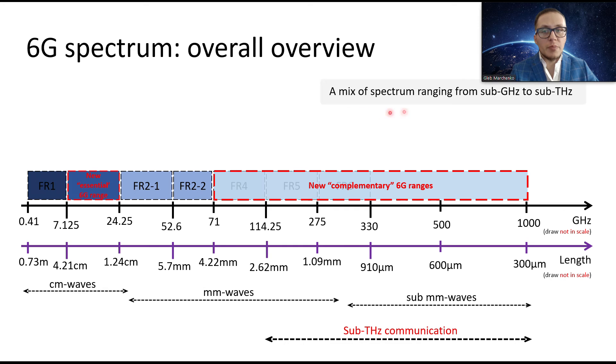6G will be a mix of spectrum ranging from sub 1 GHz until 1 Terahertz. This is impressive I think. 6G will be everywhere in a spectrum from sub 1 GHz until 1 Terahertz.